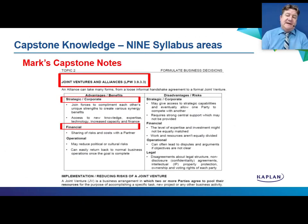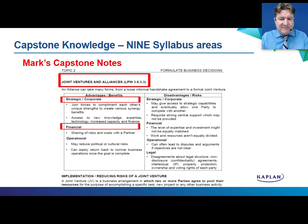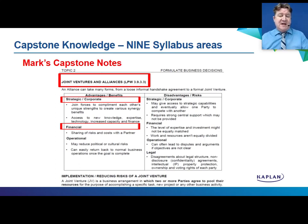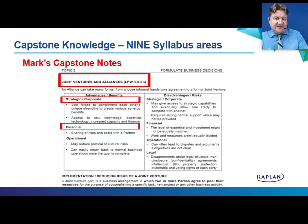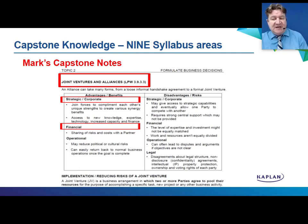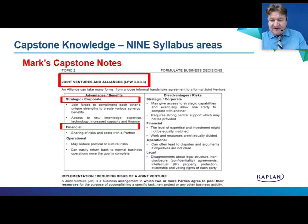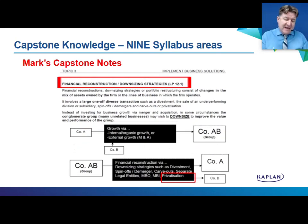Here, for instance, is topic two — formulating business decisions — and we go through many decision areas. Here, for instance, is joint ventures and alliances. What's quite popular in the capstone exam is often asking things like advantages, benefits, or disadvantages and risks of various business decisions. They also like to ask things like strategic corporate benefits or disadvantages, risks, or financial or operational aspects.